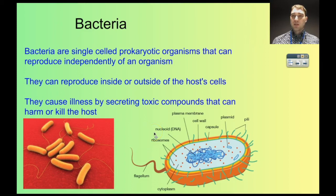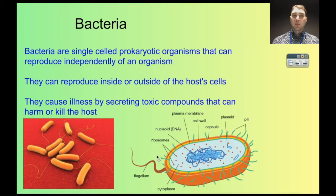The way bacteria cause illness is by secreting toxic compounds that harm the host. Depending on the species, they might produce different compounds. Let's look at some examples of infectious bacteria.